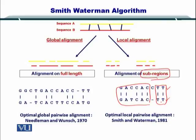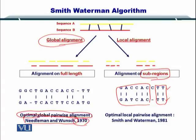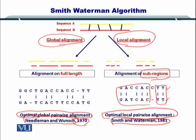You already know that to do global alignment, there is the Needleman-Wunsch algorithm, which is a very simple algorithm that gives you an optimal global alignment — reported in 1970. For local alignments, we're going to talk about the Smith-Waterman algorithm, which gives us an optimal local pairwise alignment.